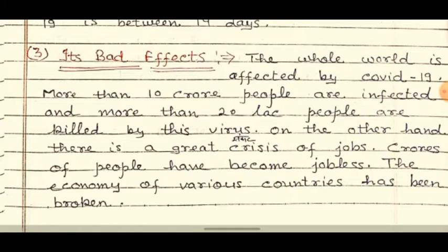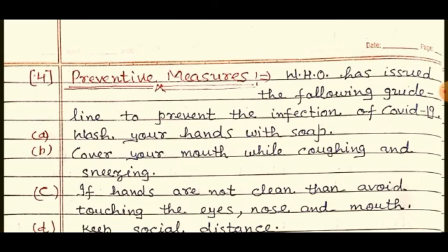Point number four: Preventive measures. WHO has issued the following guidelines to prevent the infection of COVID-19.